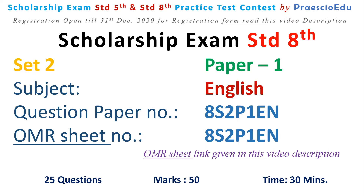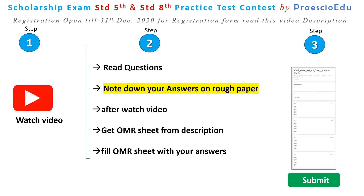What do students have to do? Here are three steps. Step 1: Watch this video. Step 2: Read all the questions and note down your answers on rough paper. After watching this video, get the OMR sheet from this video's description box. Fill the OMR sheet with your answers. In the OMR sheet, your registered email ID and role ID need to be filled, then fill your correct answers and submit it.